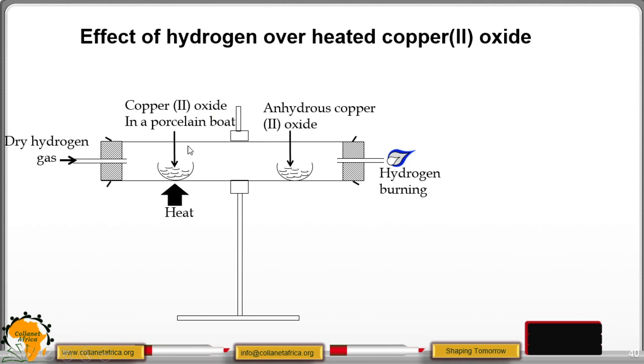Copper oxide is black in color. Once you pass the dry hydrogen gas for some time, this black solid turns into reddish brown solid, which is the copper or the copper metal.